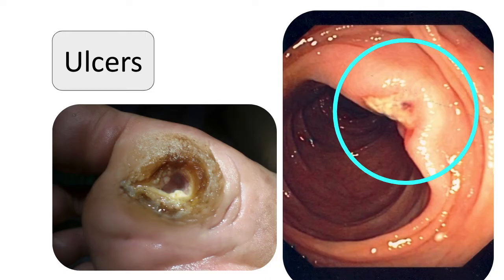Ulceration is a defect or excavation of the surface of an organ or tissue produced by the sloughing or shedding of inflamed necrotic tissue, and only occurs if tissue necrosis and the resulting inflammation exists on or near a surface. This is most commonly seen in the mouth, stomach, intestines, and GU tract, but it can also occur on the skin and subcutaneous tissue of lower extremities, typically in older people with circulatory problems which predisposes them to extensive ischemic necrosis — one condition that exemplifies this is diabetes.